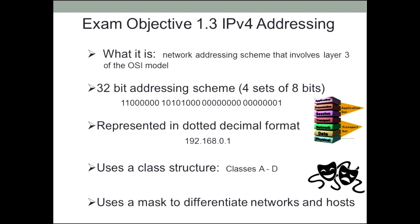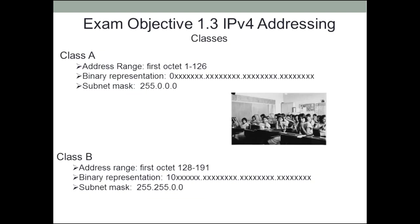This style of IP uses class addresses, or at least it did in the beginning. Those classes were A through D — actually there are more than that, but you don't need to know that, so we're only going to cover A through D. How you differentiated the different classes of IP address was through the use of a subnet mask, and we will talk about that some more in just a little bit.